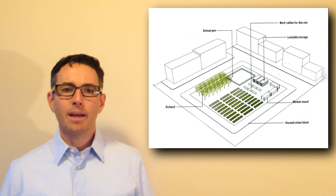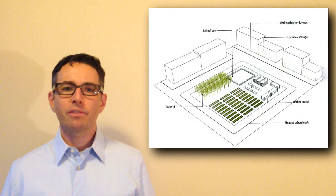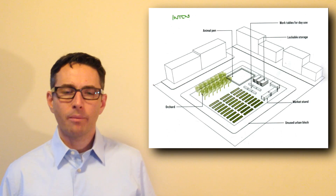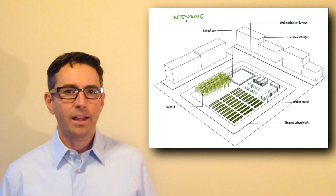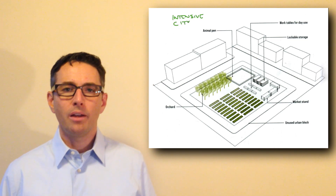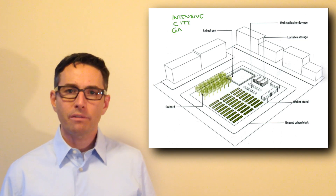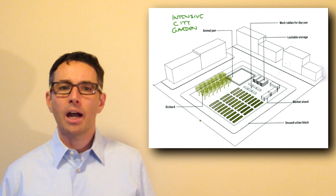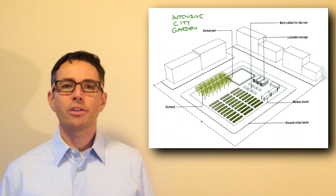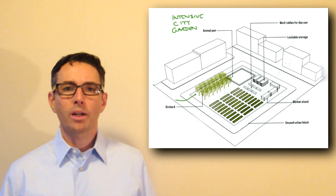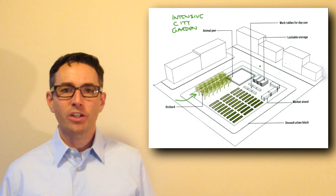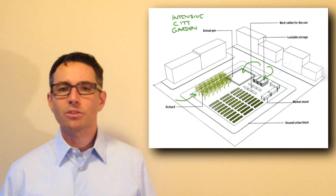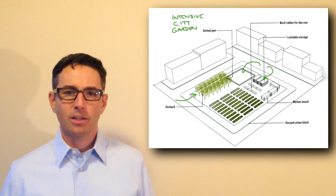The next size up would be an intensively cultivated garden, taking up more like a block within a city environment — not just a lot next to a building. This environment might have its own market for selling produce, its own farm stand, and a variety of different kinds of plantings. It might even be large enough to support an orchard, have a pen for animals, as well as places where tools can be stored and composting can take place at a larger scale.